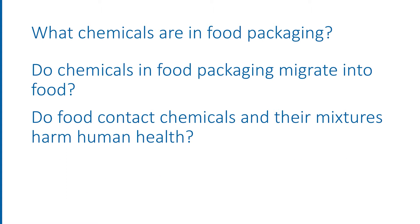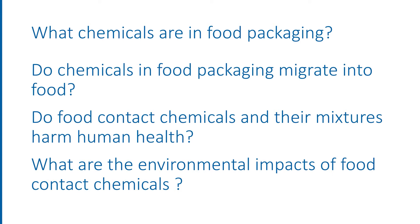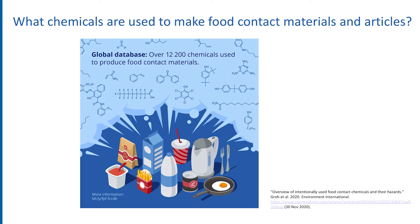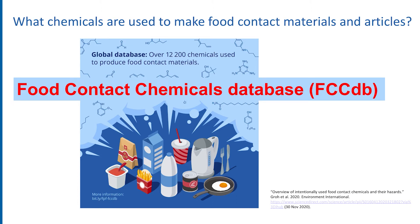And what do we know about the environmental impacts of these food contact chemicals when packaging is littered or composted? At the Food Packaging Forum, we've put together a database of chemicals that are intentionally used to make all types of food contact articles worldwide, including packaging. You can find a link to this database — the Food Contact Chemicals Database, or FCCDB — below.